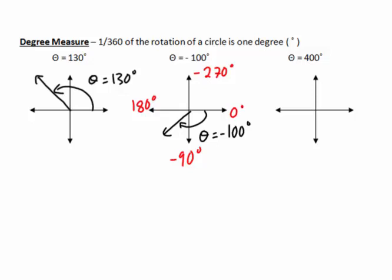Now if we have something like 400 degrees, that just means we've gone around the circle more than once. One full circle is 360 degrees, so if we take this number and minus 360 degrees, we're really just a full circle plus 40 degrees. So if we were drawing this in standard position, we'd do a full circle plus 40 degrees — there is our angle of 400 degrees. Notice they all have that circular rotation and an arrow that stops at the terminal arm.